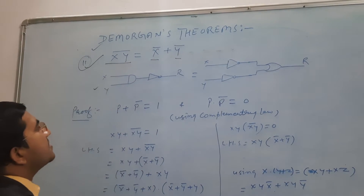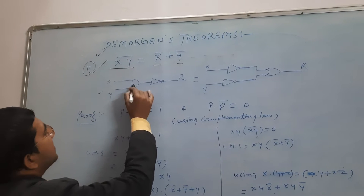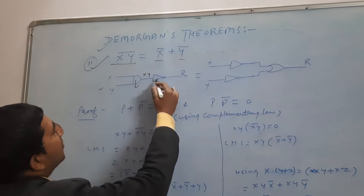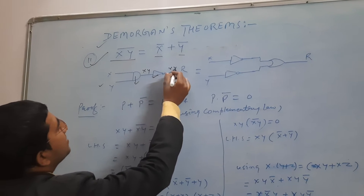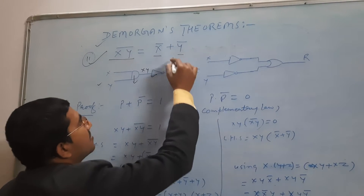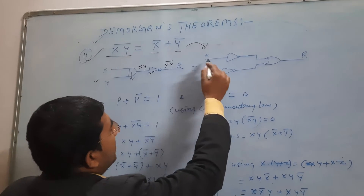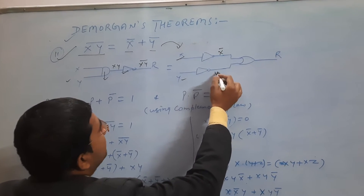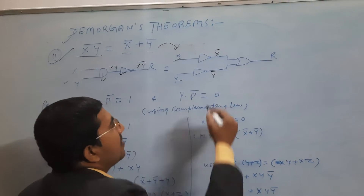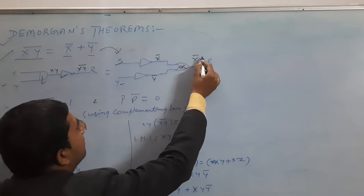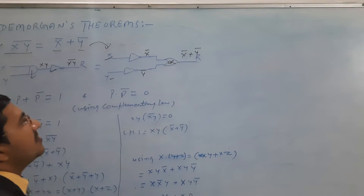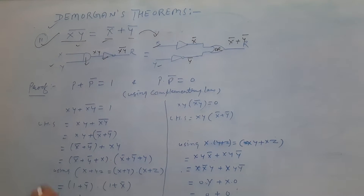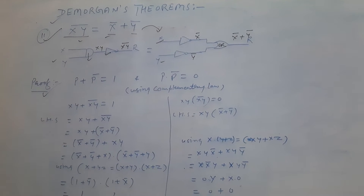This is the logic circuit diagram. Here we have an AND gate with inputs x and y, which gives the result xy. When we apply a NOT gate, this becomes xy whole bar. For the right-hand side, after passing x and y through NOT gates this gives x bar and y bar respectively. By using an OR gate we can get the result x bar plus y bar. These are the logic circuit diagrams for the two statements.